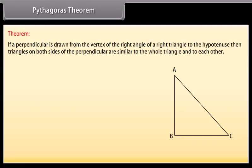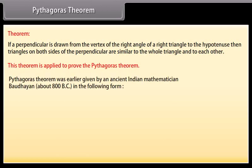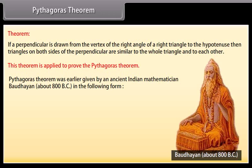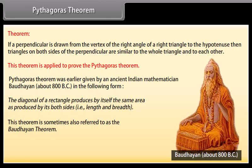Pythagoras theorem. If a perpendicular is drawn from the vertex of the right angle of a right triangle to the hypotenuse, then triangles on both sides of the perpendicular are similar to the whole triangle and to each other. This theorem is applied to prove the Pythagoras theorem. Pythagoras theorem was earlier given by an ancient Indian mathematician, Baudhayana, about 800 BC. The diagonal of a rectangle produces by itself the same area as produced by its both sides, i.e., length and breadth. This theorem is sometimes also referred to as the Baudhayana theorem.